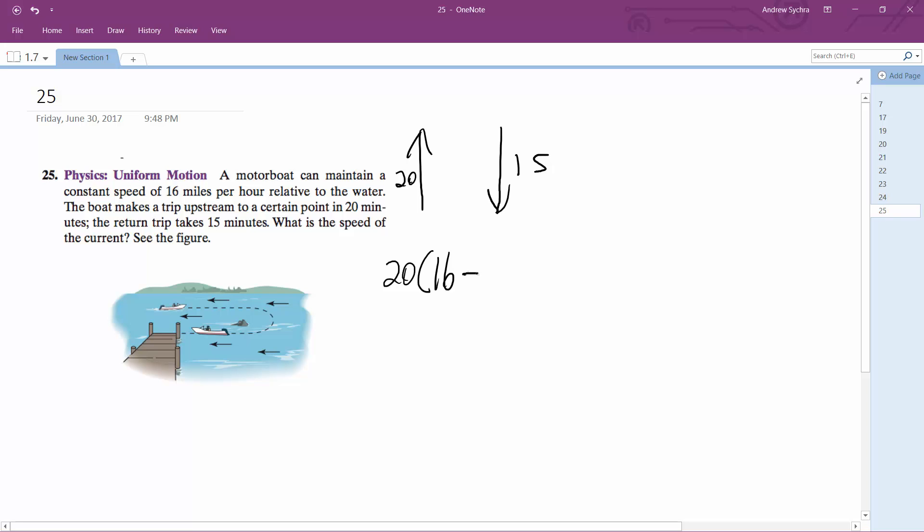Minus X because X is the mysterious speed of the water working against the boat. And for 15 minutes going downstream, we have 16 plus X.